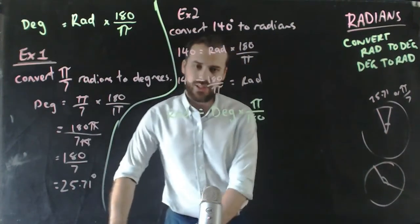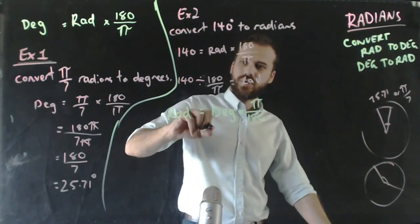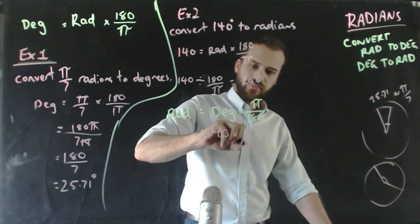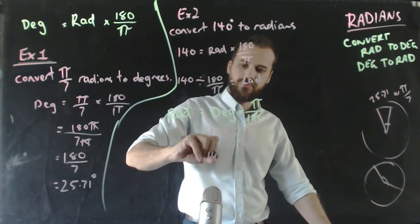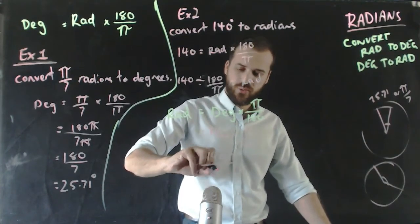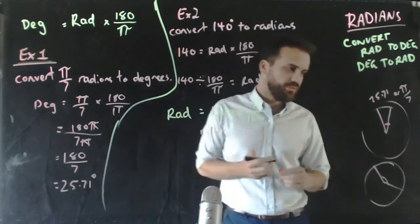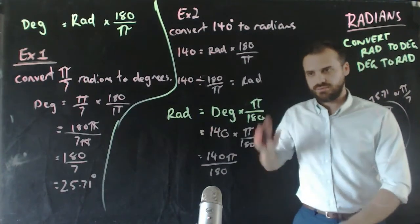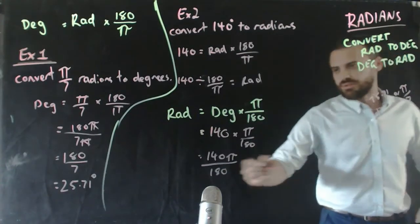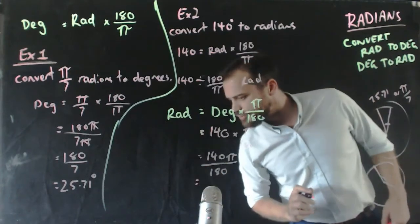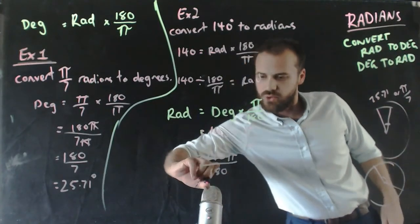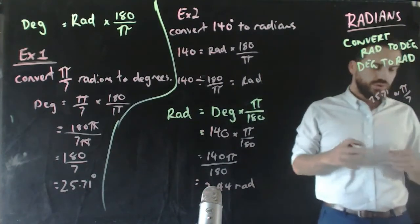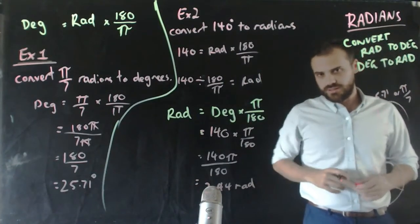If I use that formula, I avoid having to move things around. That's going to be 140π over 180. I can put that into my calculator. My calculator gives me an answer of 2.44 radians.